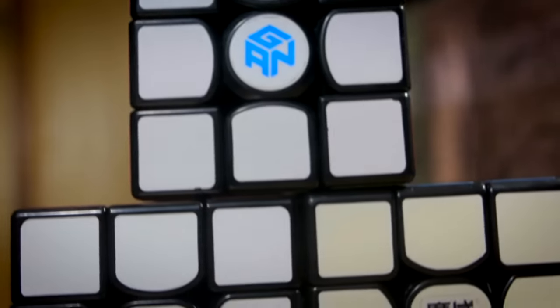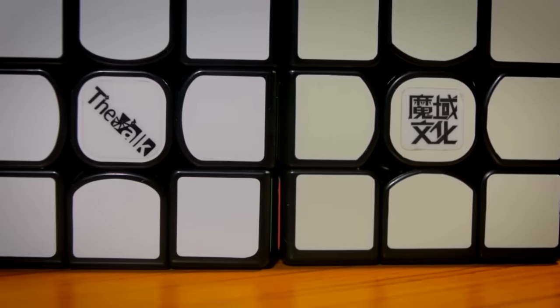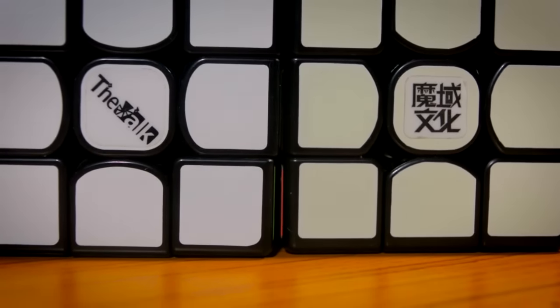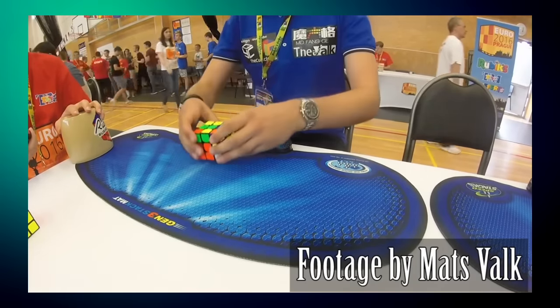The Valk 3 is a cube which is personally used and endorsed by Mats Valk, the previous world record single holder. Mats has already shown its potential by getting a 5.13 solve first time using the Valk.